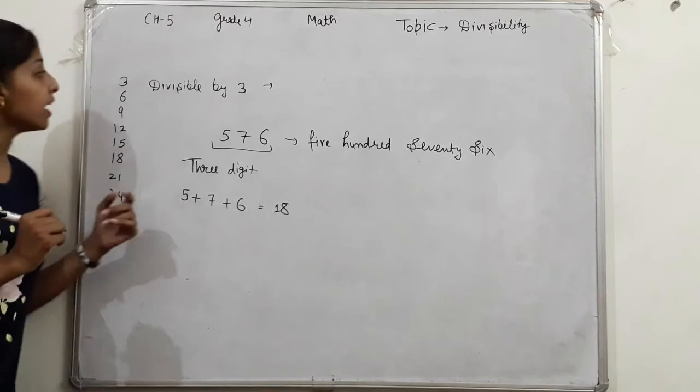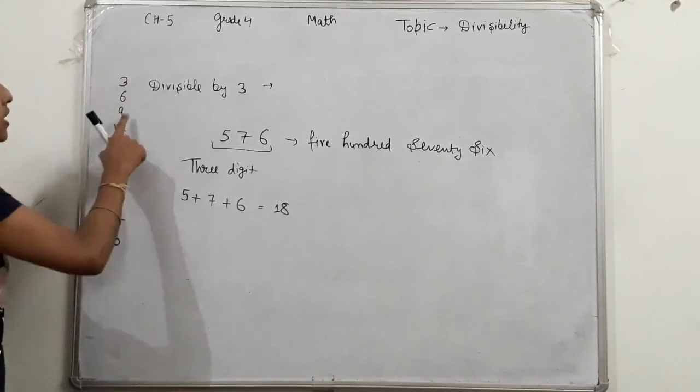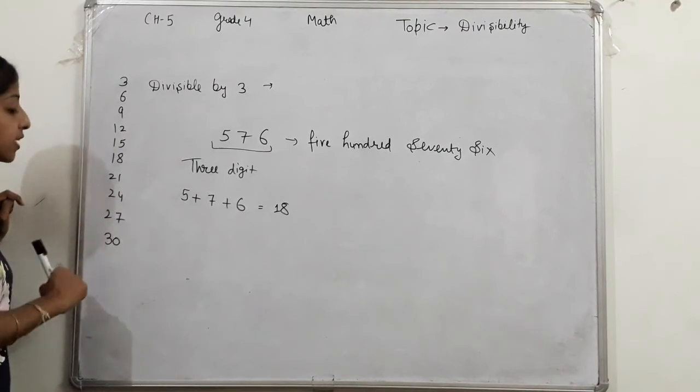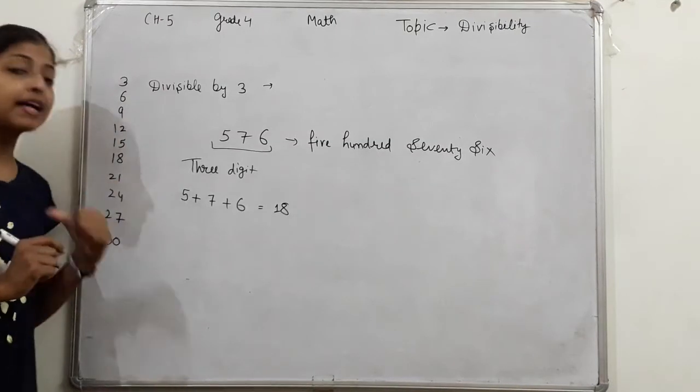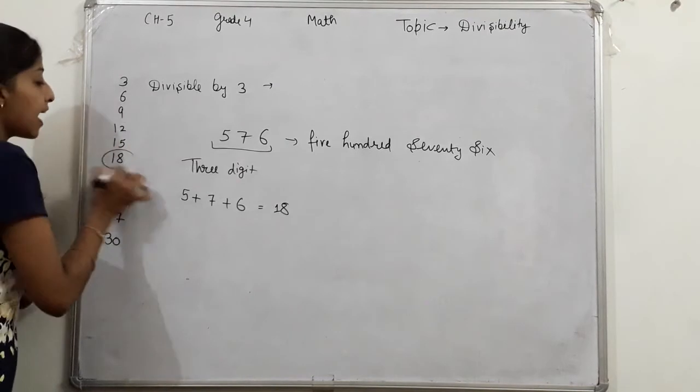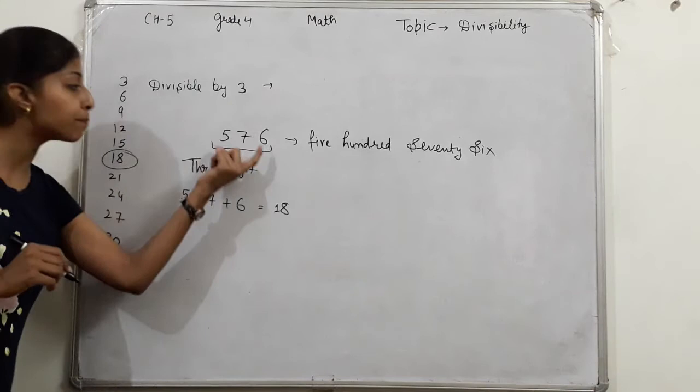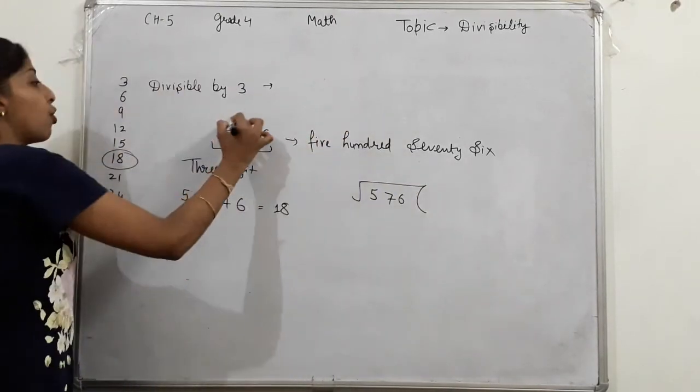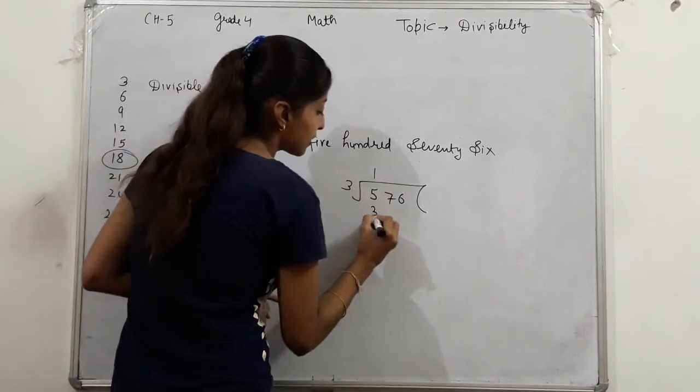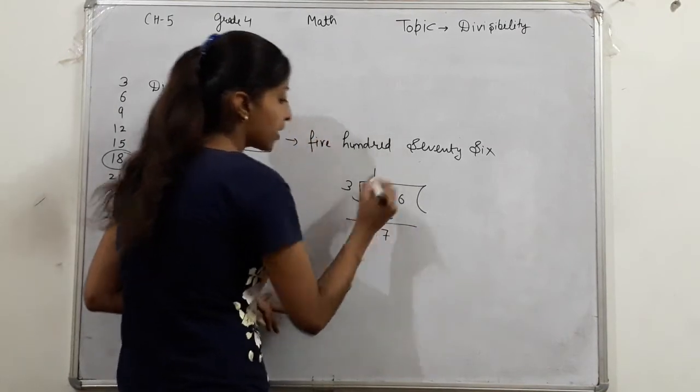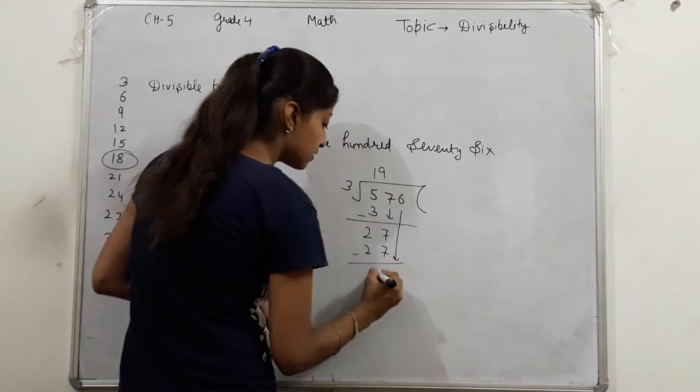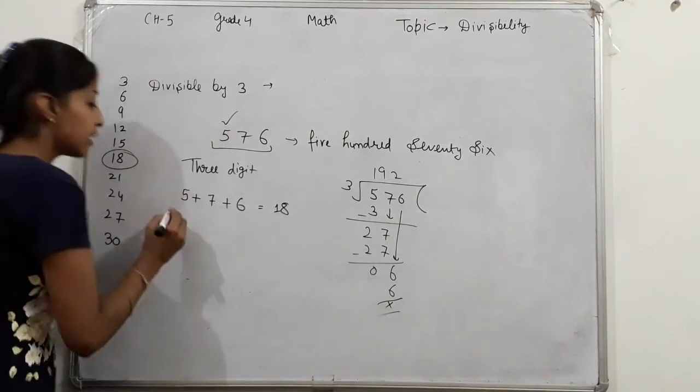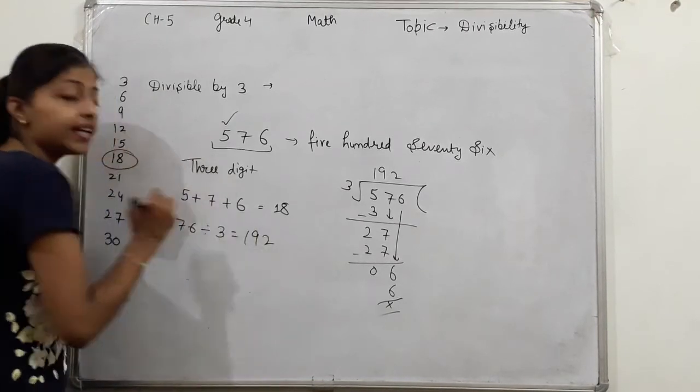Let me recall the 3's table. 3 ones are 3, 3 twos are 6, 3 threes are 9, 3 fours are 12, 3 fives are 15, 3 sixes are 18, 3 sevens are 21, 3 eights are 24, 3 nines are 27, 3 tens are 30. Is 18 in the table? Yes. If the sum comes in 3's table, then it will be completely divisible by 3. Now let's check by dividing. 3 into 576: 3 nines are 27 minus 0, 6, 3 twos are 6, cross. This is your answer.